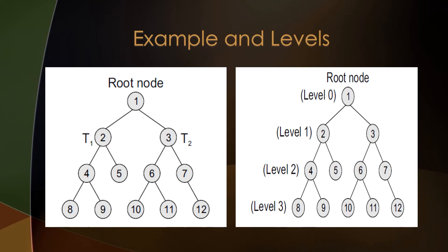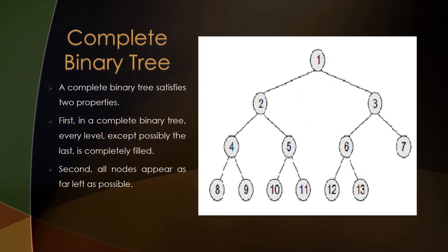A complete binary tree satisfies two properties. First, every level except possibly the last is completely filled — every level has at most two children. Second, all nodes appear as far left as possible. As you can see in the image, the last level has nodes towards the left of the binary tree.